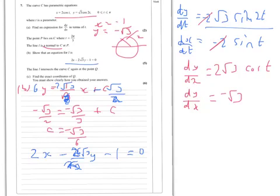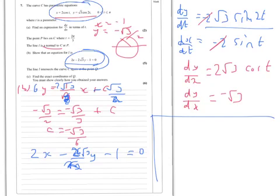Now we've got a curve. The line L intersects the curve at the point Q — find the exact coordinates of Q. You must clearly show your working. So, the usual simultaneous equations question. We've got two equations: the line and the parametric curve. I'm going to substitute the values of x — x is 2 cos t — so we get 4 cos t. And y is root 3 cos 2t. So minus root 3 times root 3.